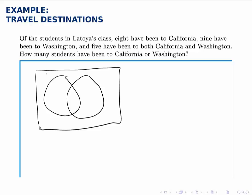So we'll label one C for California, one W for Washington, and then we have to take the information we're given and express that on this Venn diagram.